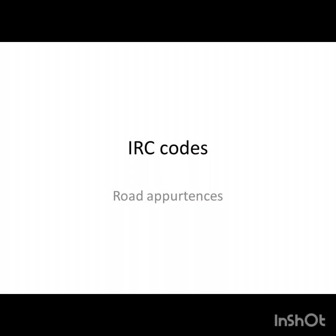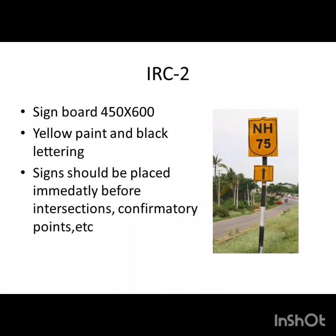First and foremost, let us see ISC 2. What are the standards for sign boards? A standard sign board is 450 mm by 600 mm. It is yellow painted with black lettering. This type of sign should be placed immediately before intersections, confirmatory points, etc.